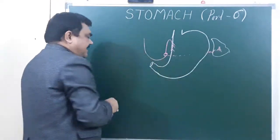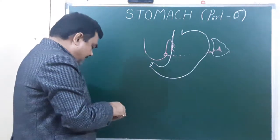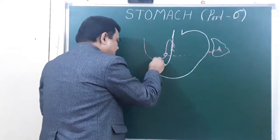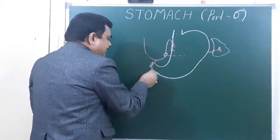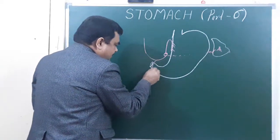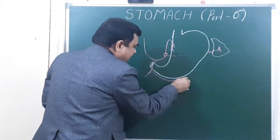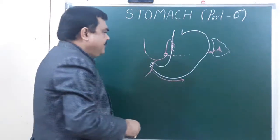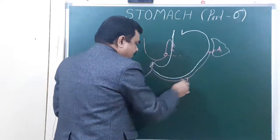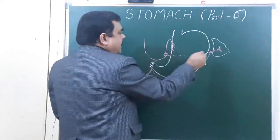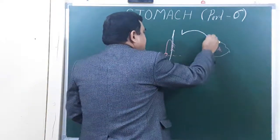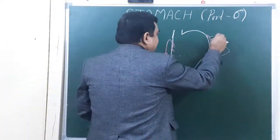This is the common hepatic. This common hepatic gives the gastroduodenal artery. This is the right gastroepiploic artery. And the splenic artery gives the left gastroepiploic artery. This is the gastroepiploic artery, and also numerous, 7 or 8, short gastric arteries. This is the short gastric artery.